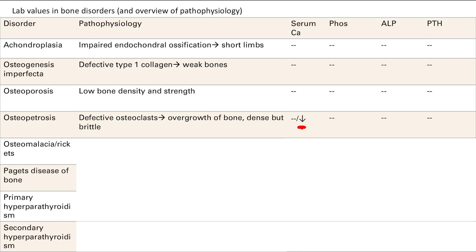Paget's disease: overactive osteoclasts and osteoblasts causing disordered remodeling with a mosaic pattern and very poor quality bone. Calcium and phosphate levels are normal. ALP goes up because it's a marker of osteoblast activity and osteoblasts are definitely working extra hard — and since osteoblasts are needed to activate osteoclasts, both are active. PTH will be normal because calcium and phosphate are normal, and PTH pretty much responds to calcium levels.